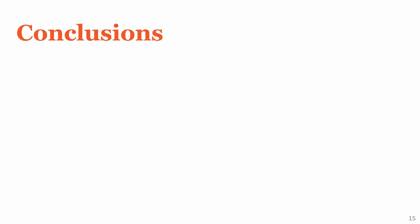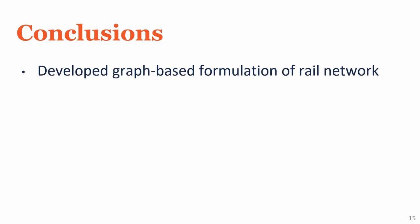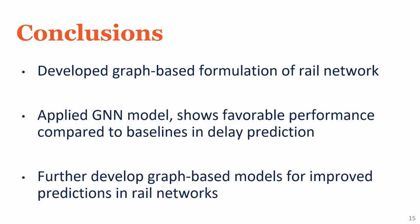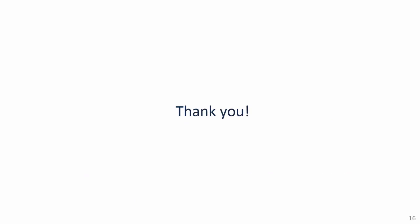To conclude this talk, I would like to recap what we have done as part of this work. First, we developed a graph-based formulation of the rail network. We then applied a graph neural network model which demonstrated favorable performance compared to other baselines in a rail delay prediction problem. Finally, as a result of this work, we believe that graph neural networks can bring a great deal of value to prediction problems in rail networks, and we hope that other researchers in this area are inspired to understand how graph neural networks can bring value to other areas of transportation as well. Thank you very much for your time.